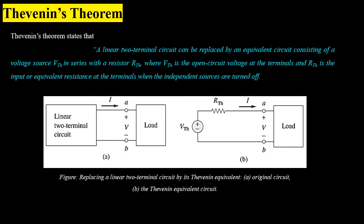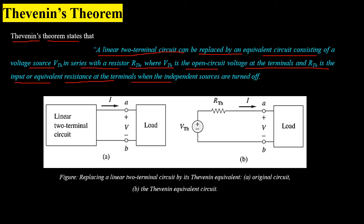We divide our circuit into two parts: one will be fixed and the other will be variable depending on the load. The Thevenin theorem states that a linear two-terminal circuit can be replaced by an equivalent circuit consisting of a voltage source known as Thevenin voltage in series with a resistor known as Thevenin resistance. The Thevenin voltage is the open circuit voltage at the terminals, and the Thevenin resistance RTH is the input or equivalent resistance at the terminal when independent sources are turned off.